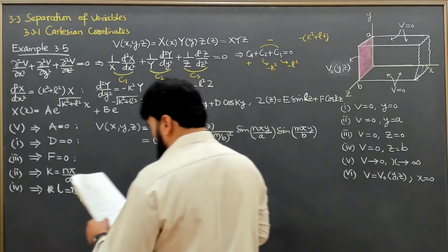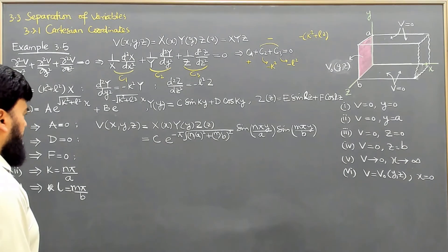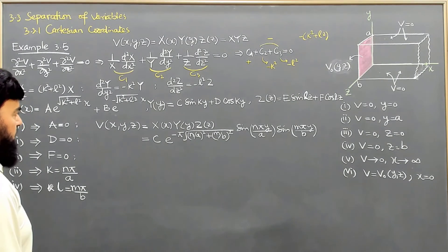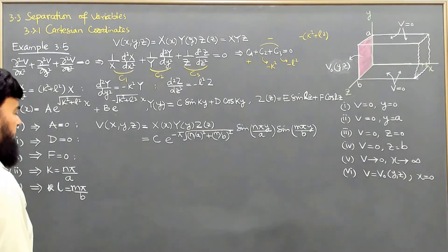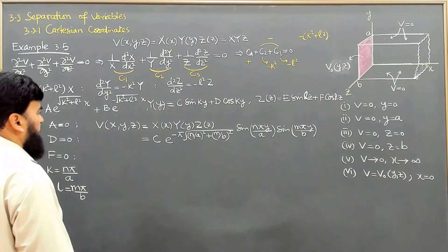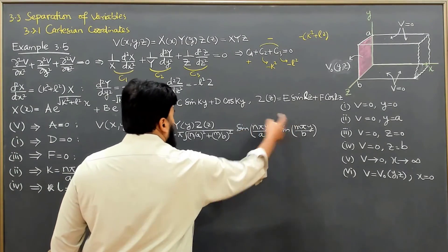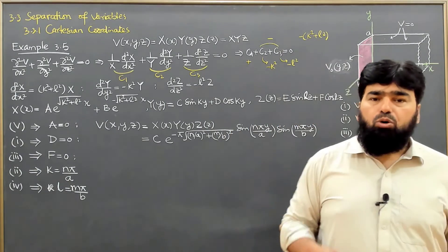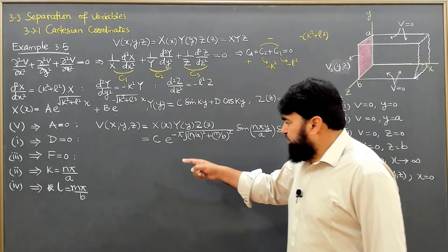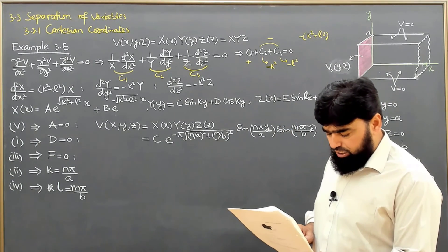This is the final form of the solution. Now we are ready to write the linear combination. In the linear combination, the summation will be over both n and m. Earlier in the two-dimensional case we had summation only on n, but now with two indices we will have two summations.